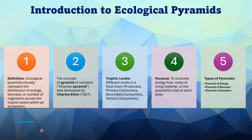Ecological pyramids are also known as Eltonian pyramids. They are based on the food chain: producers, primary consumers, secondary consumers, and tertiary consumers. Their purpose is to illustrate energy flow, mass of living organisms, and population size at each trophic level.